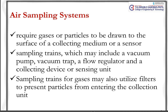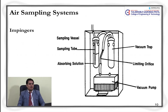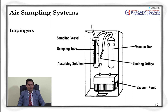Air sampling requires gases or particles to be drawn to the surface of a collecting medium or sensor. Sampling trains may include a vacuum pump, vacuum trap, a flow regulator, a collecting device, and a sensor unit. Filters may also be used to prevent particles from entering the collecting unit. In the sampling system diagram, you can see the sampling tube with absorbing solution, the vacuum trap, the limiting orifice, and the vacuum pump — a systematic diagram of the air sampling system.